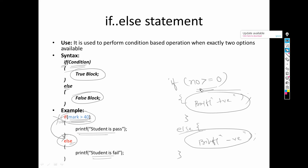If this condition is true, it executes the if block and then directly jumps to the next line, skipping the else part. If this condition is false, the if part will not be executed and it will directly jump to the else part. This is the simple if-else statement. Other variants like multiple if-else and else-if ladder will be discussed later.